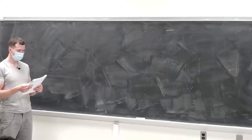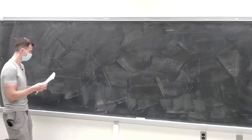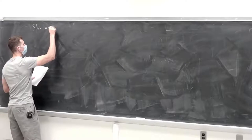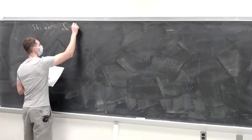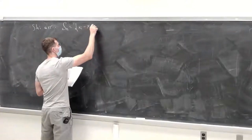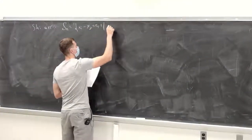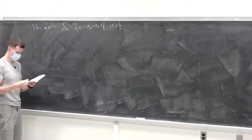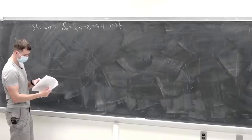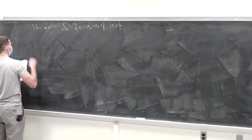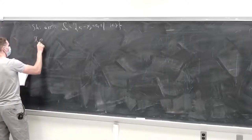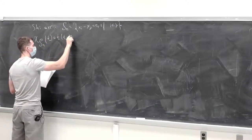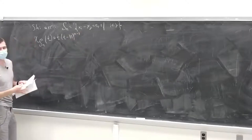Hi everyone, welcome back. Last time I was talking about the chi arrangement — xi minus xj is either 0 or 1 for all i less than j — and what we concluded was that it has a characteristic polynomial, which is very nice: t times (t minus n) to the (n minus 1), using the finite field method.